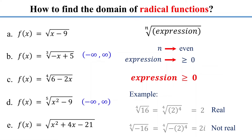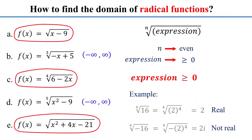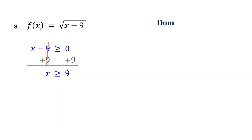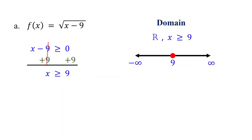Remember, if the index of the radical is not shown, it is assumed to be two, which is an even number commonly known as the square root. For the first function to be defined, x minus 9 must be greater than or equal to zero. Solving, we find that x is greater than or equal to nine. Therefore, the domain is all real numbers greater than or equal to nine. On a number line, mark a closed circle at nine and shade to the right. The bracket around nine indicates that nine is included in the domain.